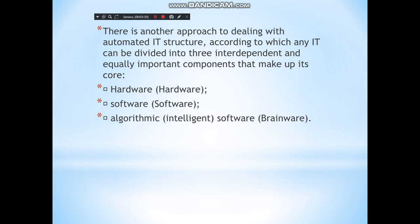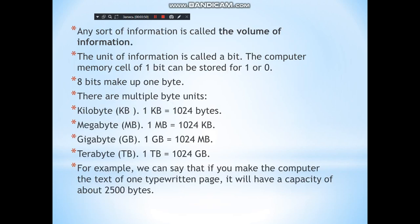There is another approach to automated information technology structure, according to which any information technology can be divided into three interdependent and equally important components: hardware, software, and intelligent software (brain work). Any quantity of information is called the volume of information. The unit of information is called a bit. One bit can store either a one or a zero. For example, the text of one typewritten page has a size of about 250 bytes.